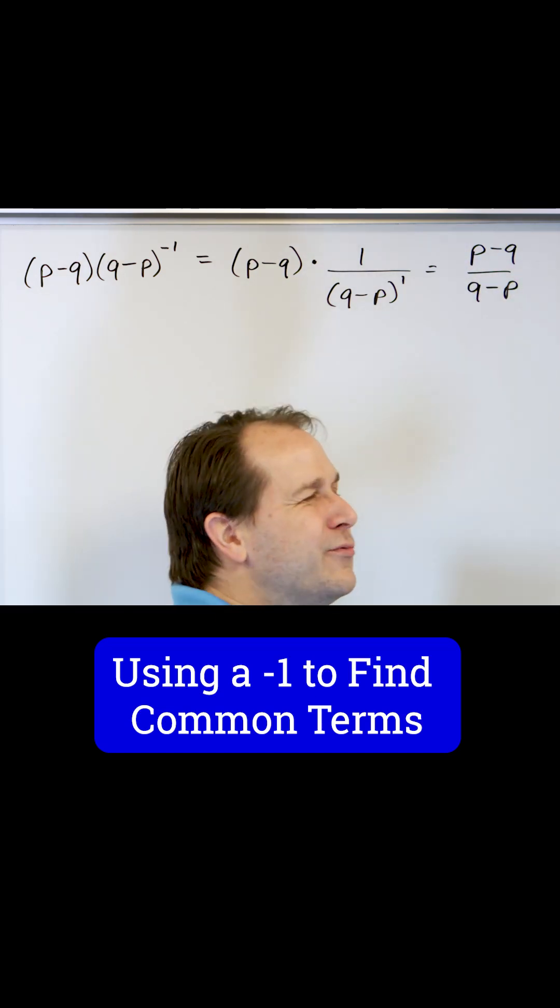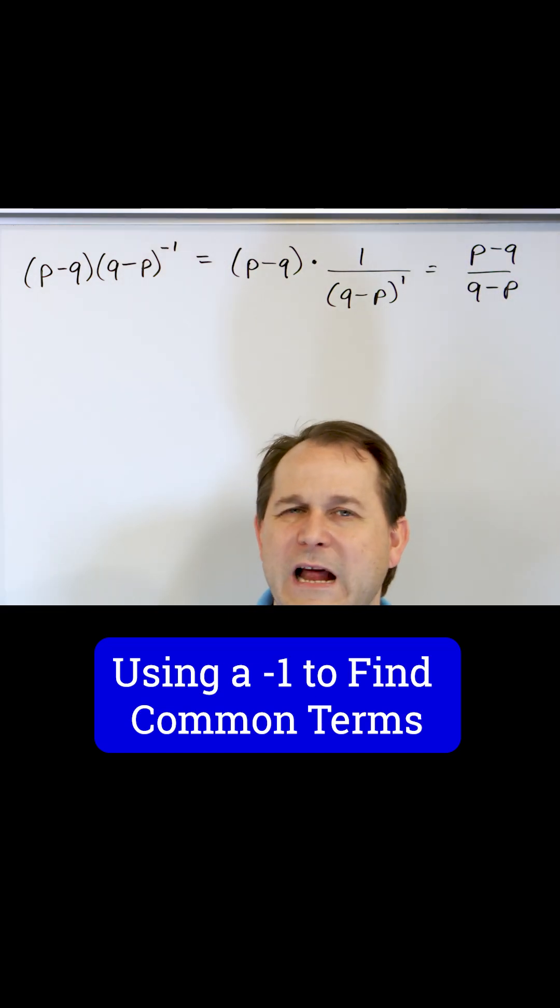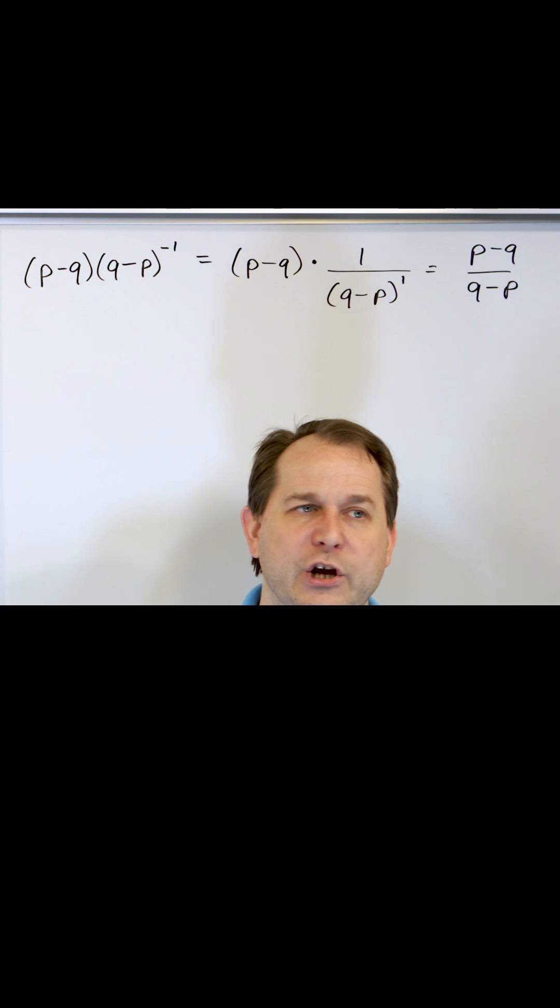So this is P minus Q, this is Q minus P. Don't they sound really similar? I mean, obviously you can't just strike through them because P minus Q is different than Q minus P, just like 2 minus 3 is different than 3 minus 2.